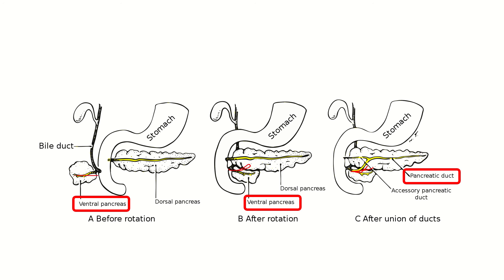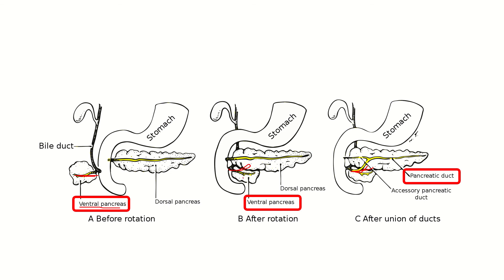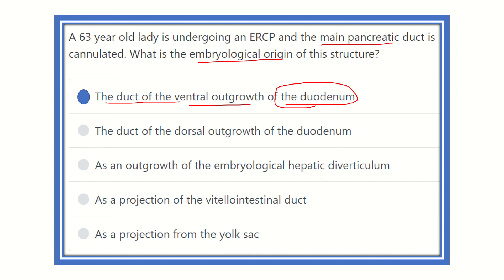It is now clear that the main pancreatic duct is formed by the ventral pancreas. The main pancreatic duct is embryologically originated from the duct of the ventral outgrowth of the duodenum — not the dorsal outgrowth, not the hepatic diverticulum. This is clear from the picture: the ventral outgrowth contains this duct, which forms the main pancreatic duct after rotation is complete. Thank you.